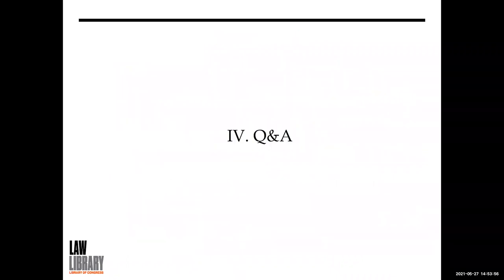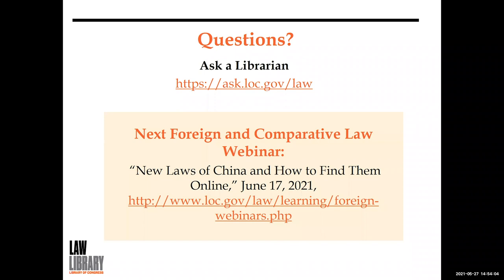This concludes the presentation portion. We will now move to Q&A. If I don't get to your question, you can submit them through our Ask a Librarian service — the address is on the PowerPoint, or you can go to law.gov. Our next Foreign and Comparative Law webinar is on June 17th, 2021, on new laws of China and how to find them online. If this presentation got you interested in China's digital currency, that would be a good webinar to attend to learn how to find Chinese legislation.